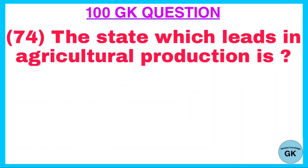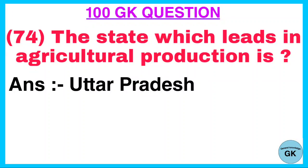Question. The state which leads in agricultural production is? Answer. Uttar Pradesh.